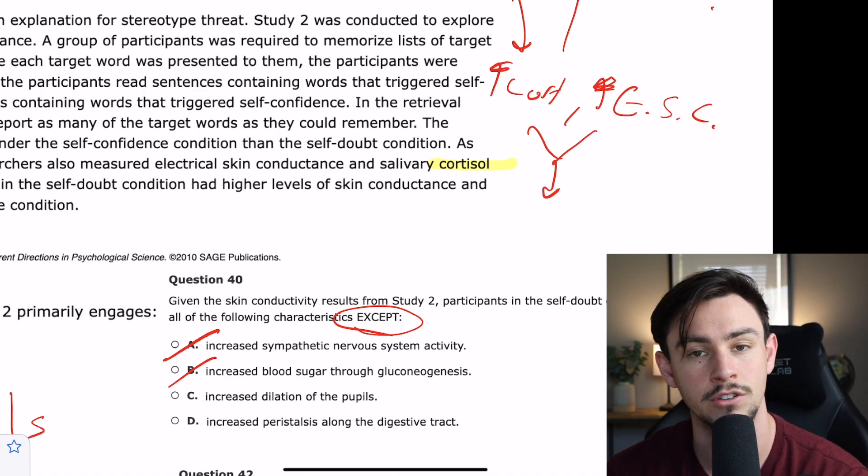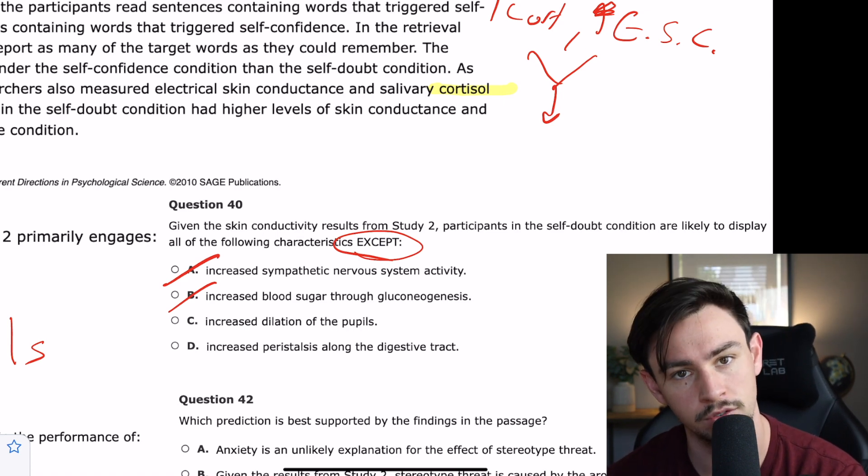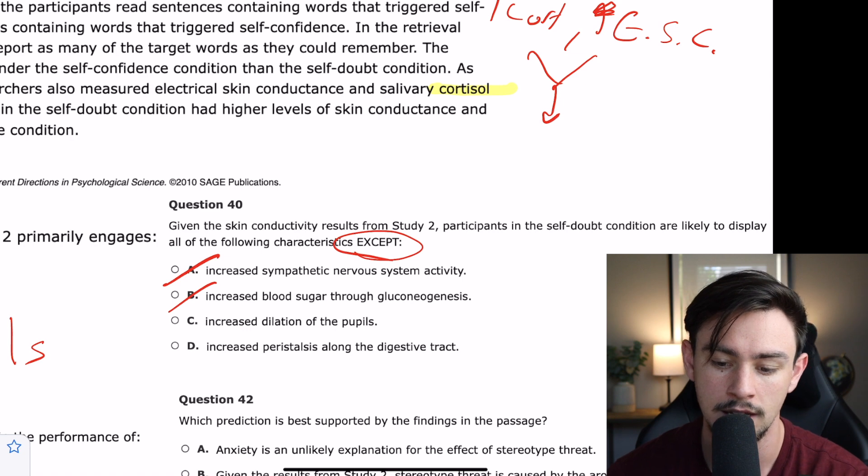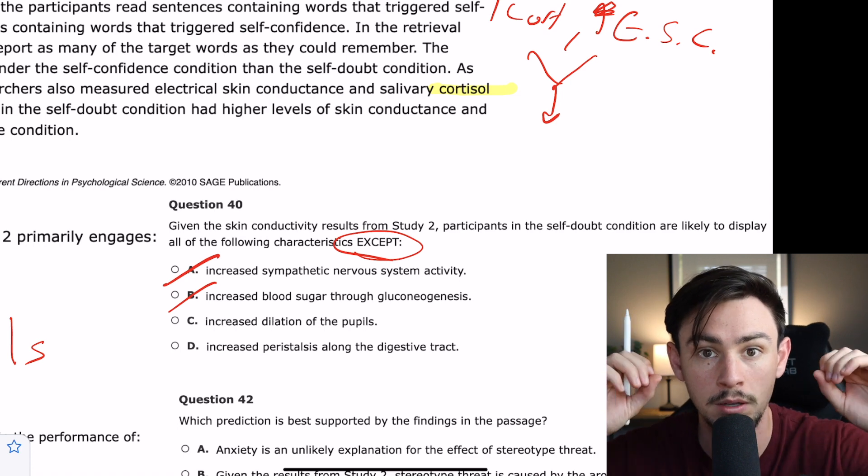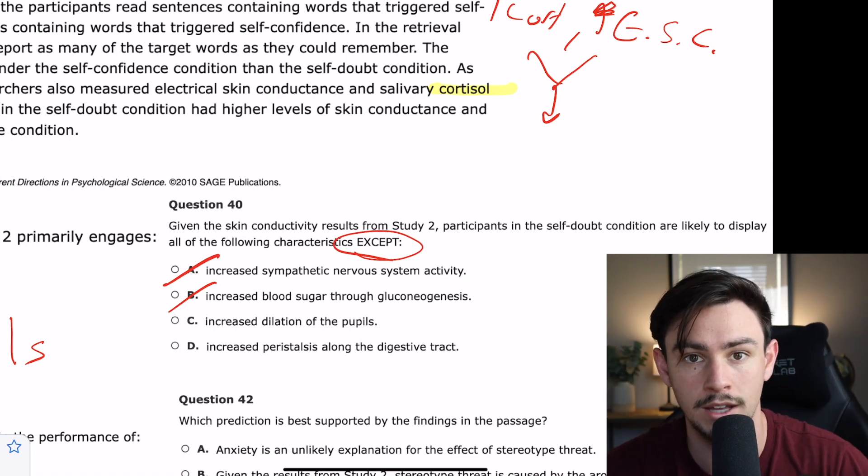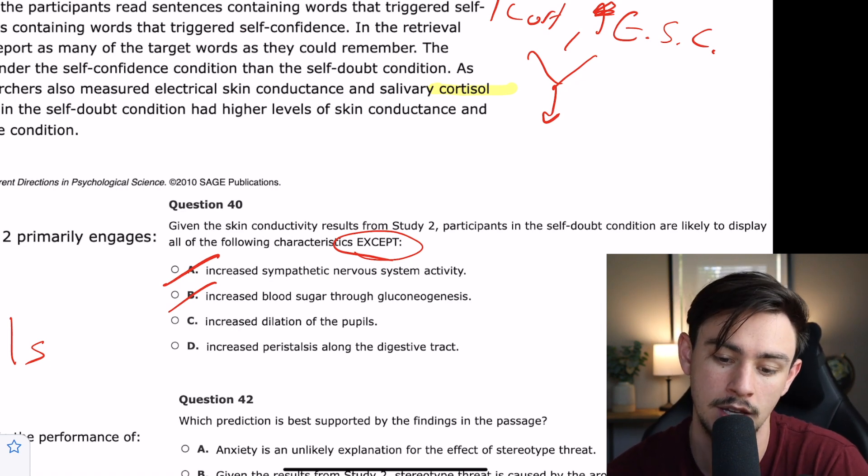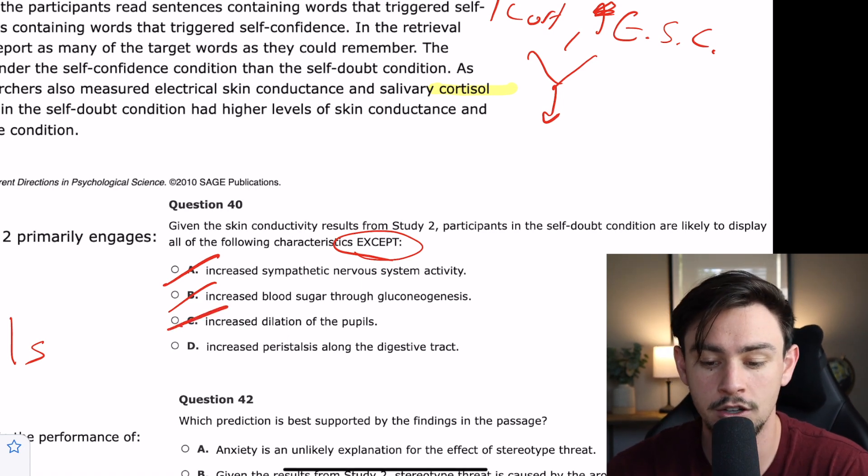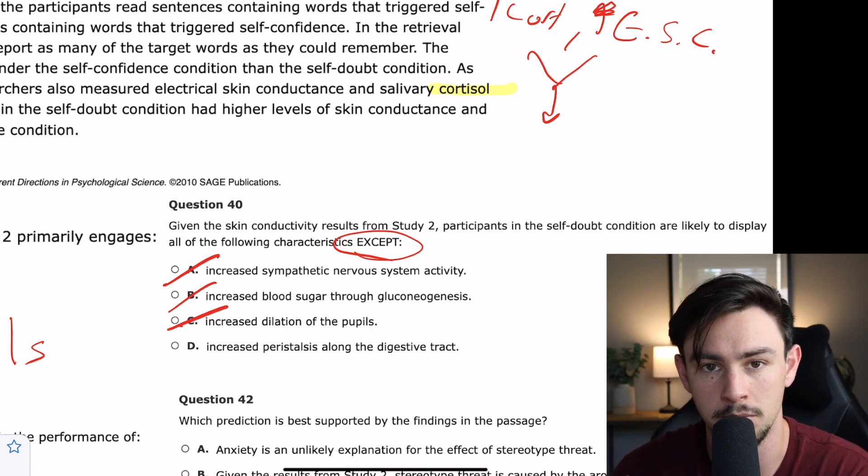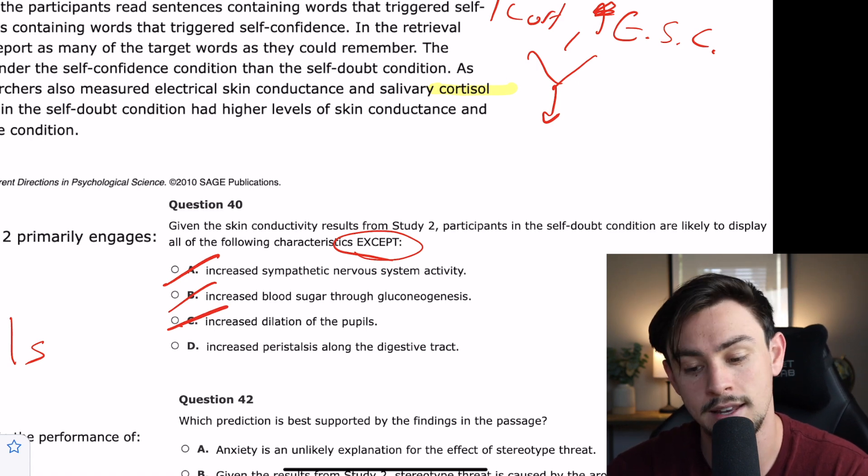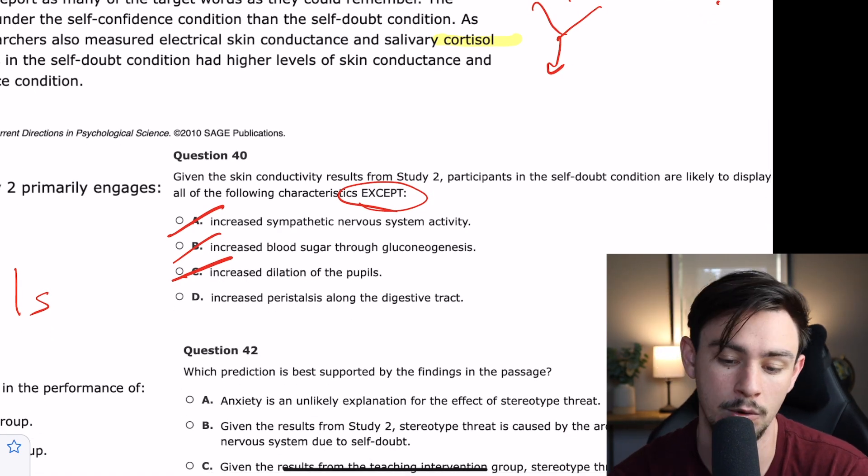C says, increase dilation of the pupils. Okay. When you get to this one, you're kind of like, oh, that's out of left field. What does that mean? I just want you to ask yourself, is this fight or flight? Or is this rest and digest? Increased dilation. Remember, if you were in a fight or you think that somebody's trying to kill you in a jungle, then you probably want your eyes to get bigger so you can see more at you, let more light in. And so, dilation of the pupils is actually a sympathetic nervous system response. So, the correct answer is not C. And then D says, increase peristalsis along the digestive tract. That's kind of like the motor sequences that move food along the digestive system. So, that is definitely rest and digest, right? And so, we're looking for which of these answer choices is rest and digest. And that would be answer choice D.